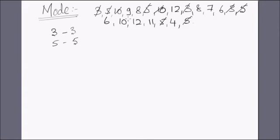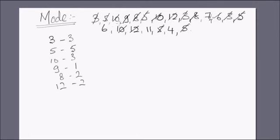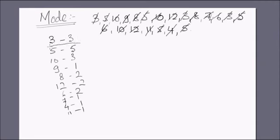Continuing the count: 10 occurs three times, 9 only once, 8 twice, 12 twice, 6 twice. What's left — 7, 4, and 11 each occur only once. So here we see that 5 stands out clearly, and so 5 is the mode of this data.